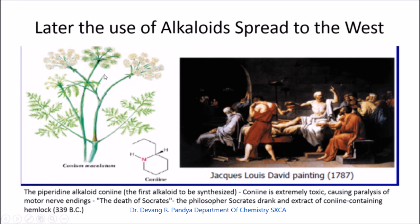Coniine is obtained from hemlock plant and is a piperidine alkaloid — it was the first alkaloid to be synthesized. Coniine is extremely toxic, causing paralysis of motor nerve endings. The philosopher Socrates drank an extract of coniine-containing hemlock and that is how he was forced to give up his life.